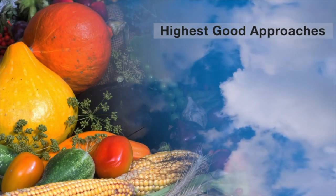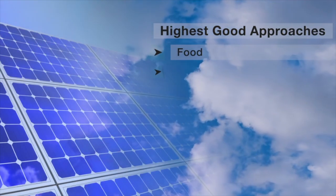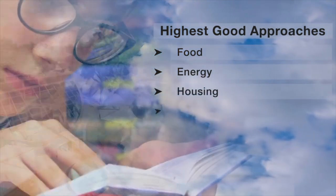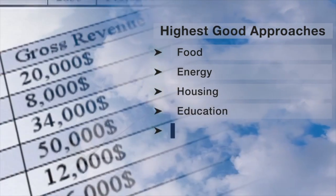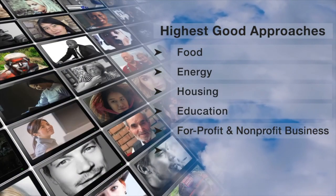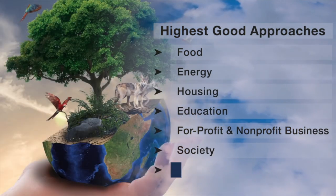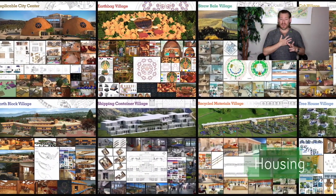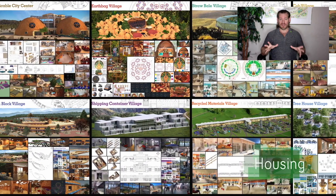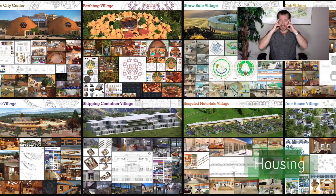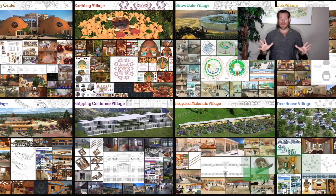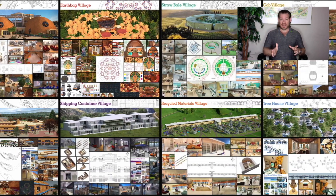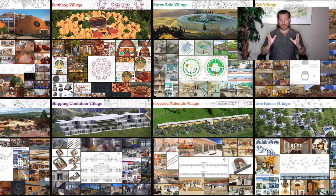This includes highest good approaches to food, energy, housing, education, for-profit and non-profit business creation, society, and true earth stewardship. My name is Jay Sable and I'm the Executive Director of the One Community 501c3 nonprofit organization. One Community is bringing together people with the consciousness and the desire for the highest good of all life on this planet to build sustainable, regenerative, and self-replicating teacher demonstration hubs as a pathway to global sustainability.